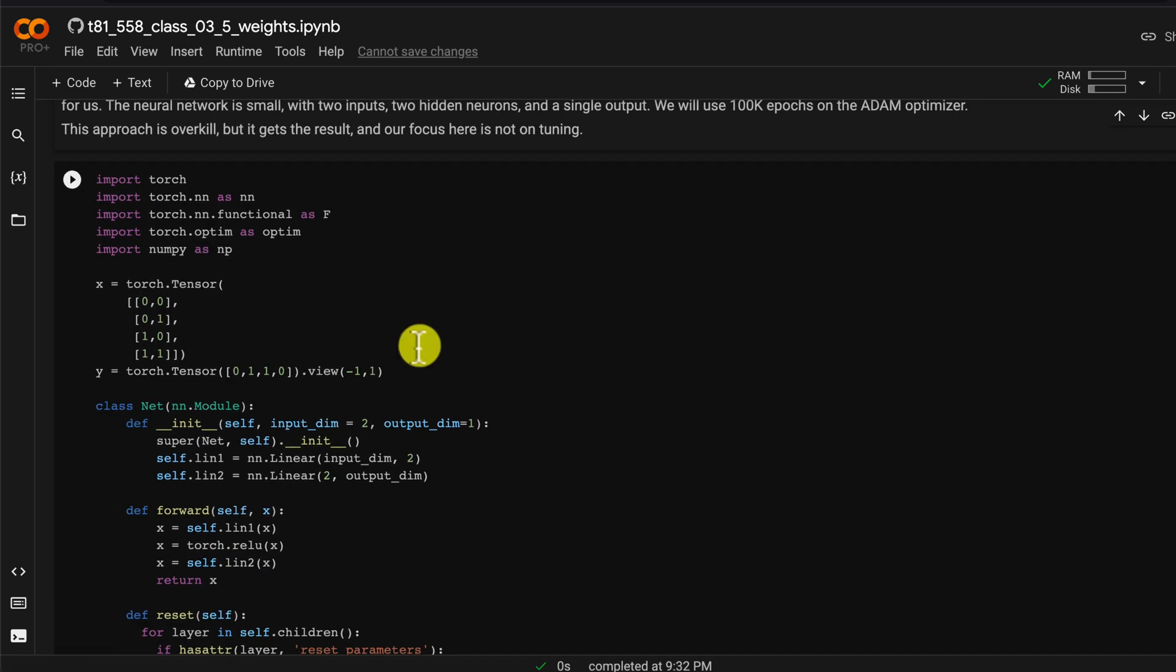This code that I have here is going to train an exclusive or neural network. Exclusive or is a logic gate that is essentially true if its two inputs are different and false if its two inputs are the same.